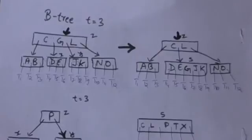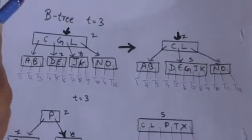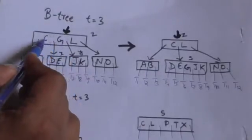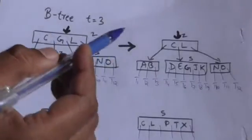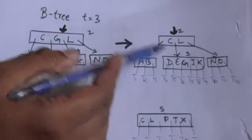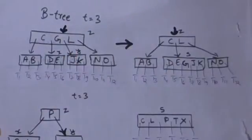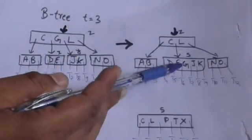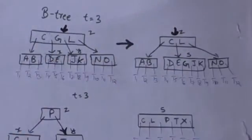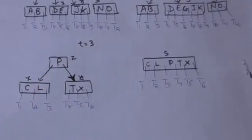Notice that before merging, key G was between keys C and L in node z. After merging, nodes x and y are merged into node s, and node s is the child of node z between the keys C and L.